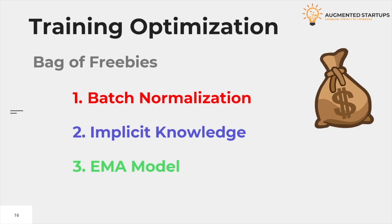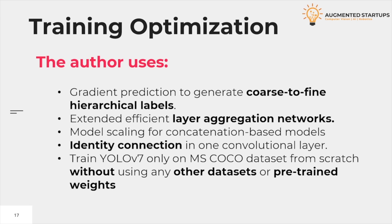Training optimizers. The authors use gradient prediction to generate coarse-to-fine hierarchical labels. The authors also used extended efficient layer aggregation networks. The authors also performed model scaling for concatenation-based models and identifying connections in one convolutional layer.